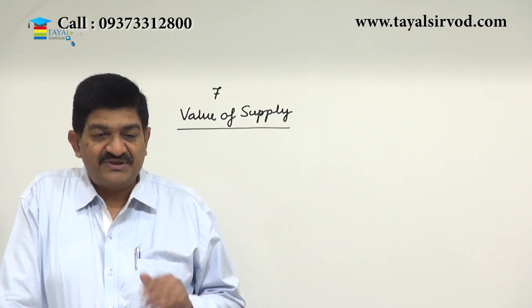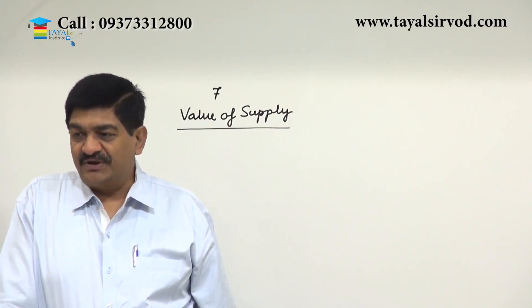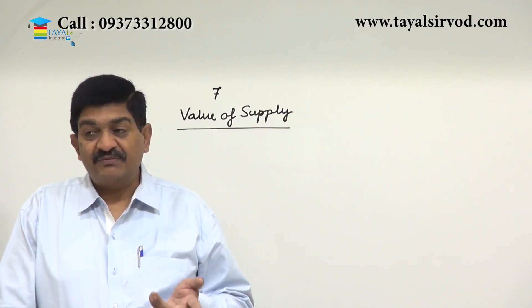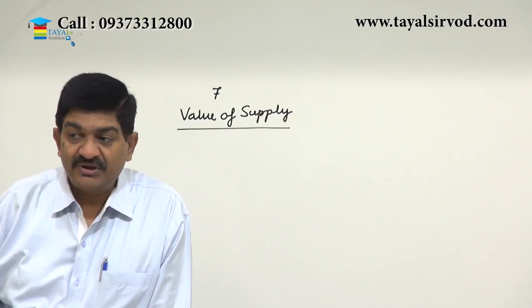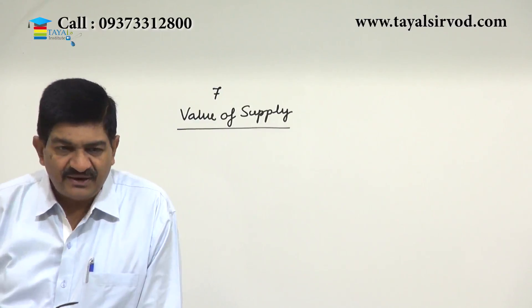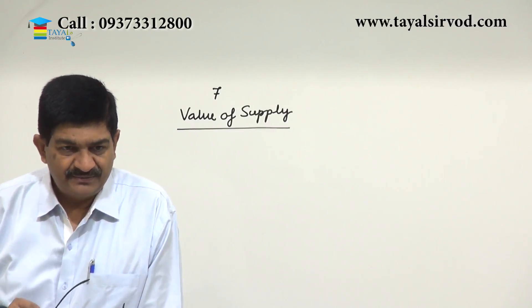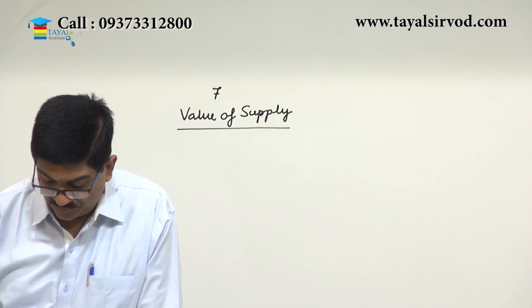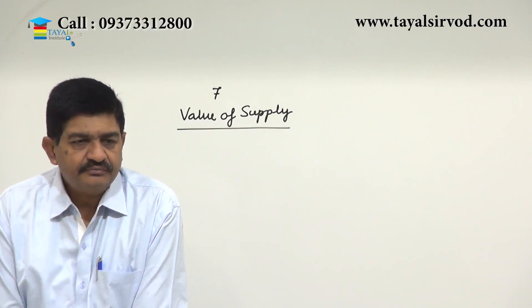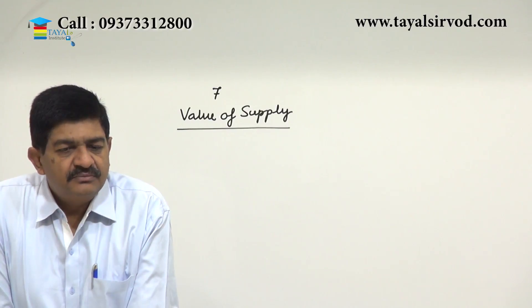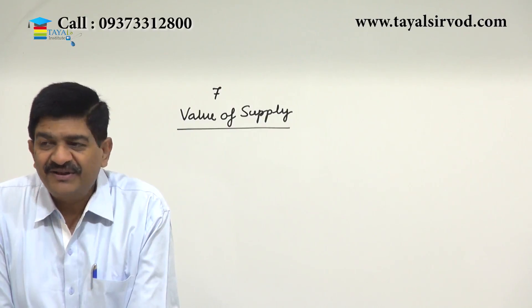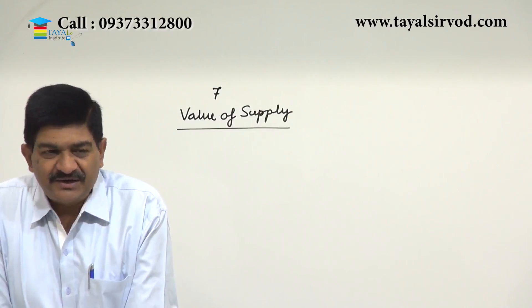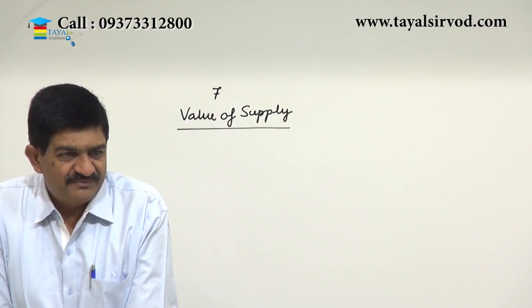If there is any other tax by the state government, that is also included in the value. So it means there will be tax on tax, but to a large extent all other taxes have been removed because of GST. The chances are very rare that any other tax exists, but it can happen. Another learning outcome is to comprehend and analyze the various rules providing the mechanism to value a supply in situations where the transaction value cannot be adopted — for instance, in respect of goods supplied to a sole distributor for resale.